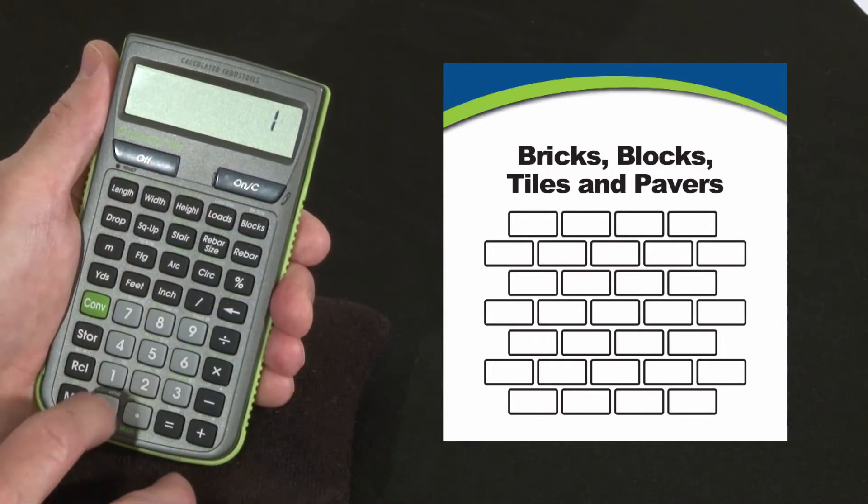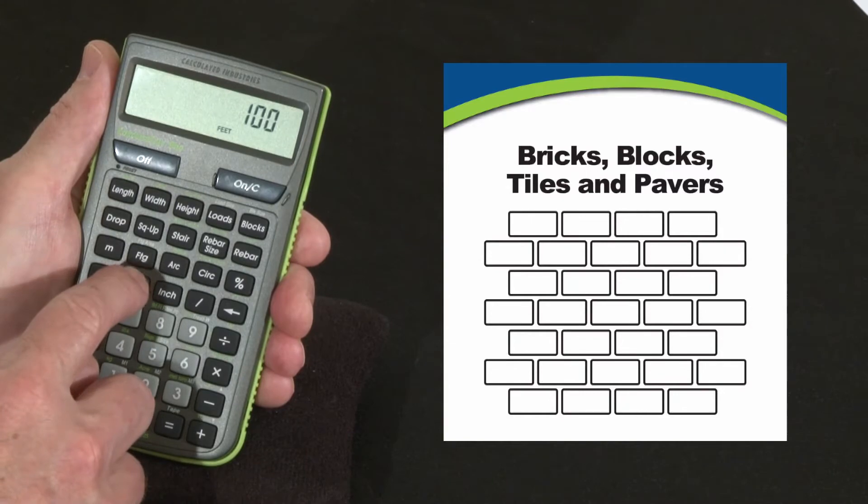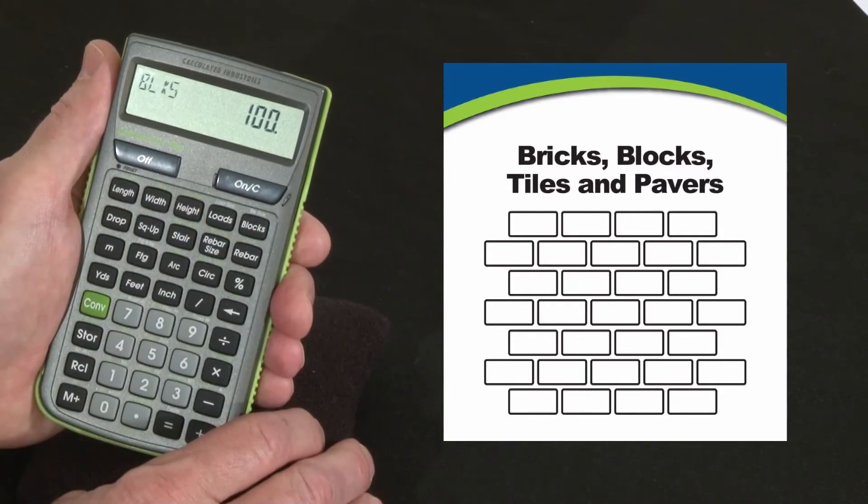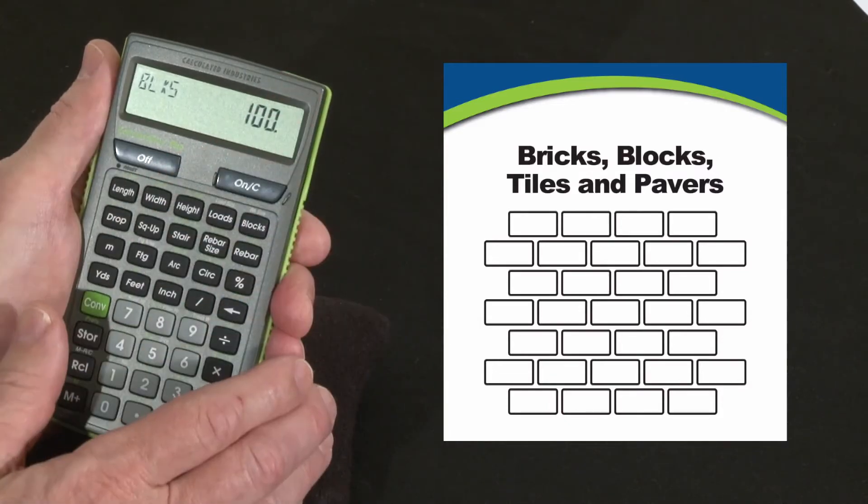So now let's put in, just directly put in 100 square feet. Feet, feet, two presses gets us to square feet. Now press blocks, we're going to have 100 of those one foot square tiles in that room. That makes sense.